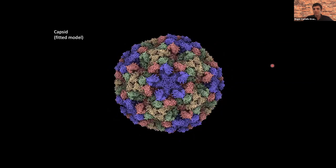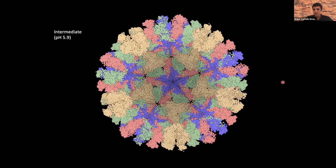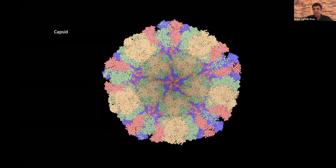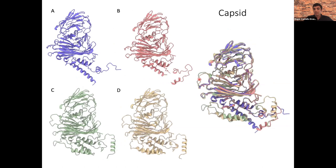Looking through a section, the procapsid has pores, and as maturation proceeds you can see how they close, resulting in a very compact particle that would be resistant to the environment. Looking at the subunits of the virus, in the procapsid all subunits have the same conformation. But when the particle matures, the different subunits specialize. In the helical part, they adopt different conformations related to their final function — whether more lytic or structural. The coat protein, depending on where it is positioned in the particle, is able to reach a different folding.